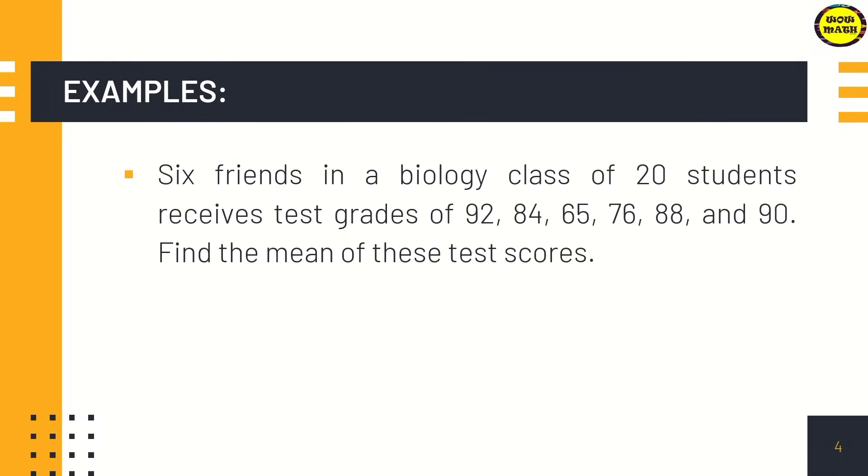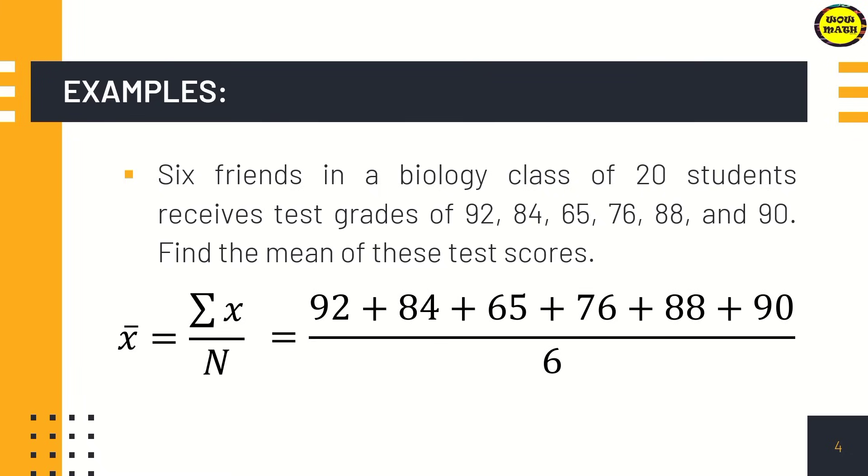For example, six friends in a biology class of 20 students receive test grades of 92, 84, 65, 76, 88, and 90. Find the mean of these test scores. First, using the formula, we're going to get the sum of their scores: 92 plus 84 plus 65 plus 76 plus 88 plus 90 over 6. That is 495 divided by 6, which equals 82.5. Therefore, the mean test score of the 6 students is 82.5.